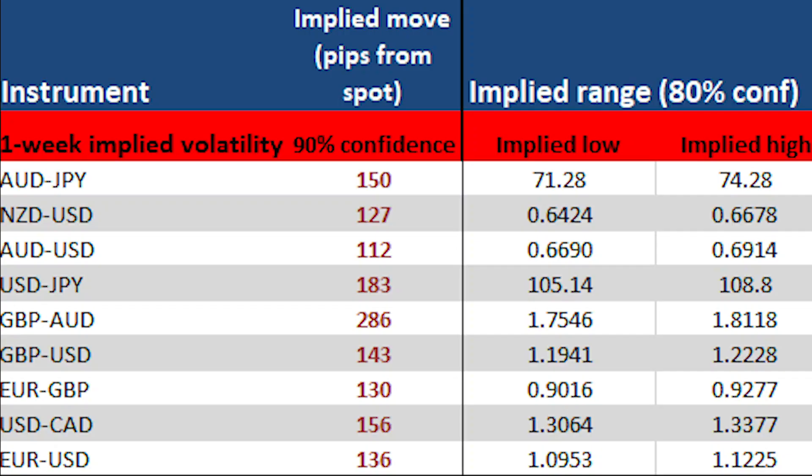We can take our level of confidence out further, use strangle prices and look at 10 deltas to get a sense of extreme moves. The market is saying that on an extreme upside move, cable is likely to reach at most 122.28, and on an extreme downside move it's capped around 119.41. We're using a 10 delta, so the probability of those options becoming in-the-money on the week is very low — but that's what the market considers an extreme move.